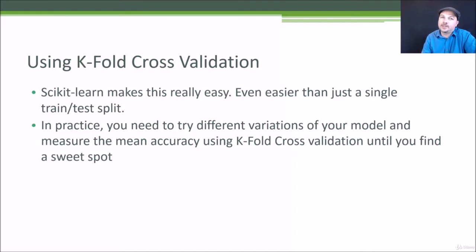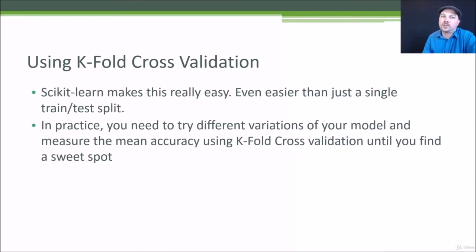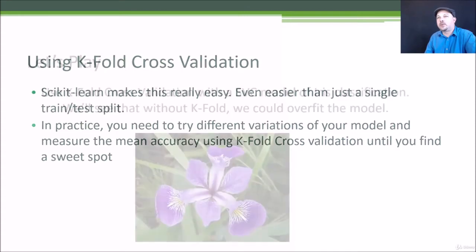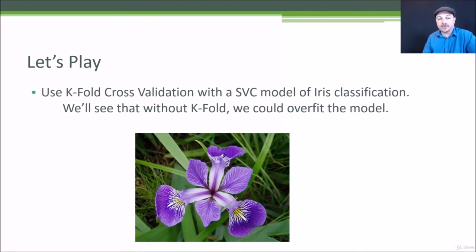In practice, use k-fold cross-validation to measure the accuracy of your model against a test data set, keep refining that model, trying different values and variations, or maybe even different models entirely, until you find the technique that reduces error the most. Let's dive into an example using the iris data set with SVC and see how simple it is.